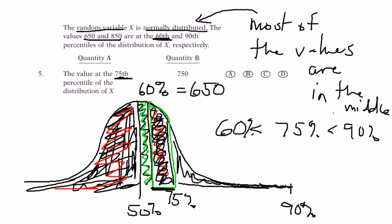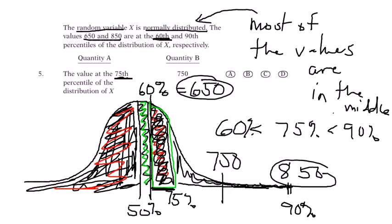In other words, the value... Oh, and the whole point of this was that we were told that this is 650 and 90% is 850. This line right here is 650 and 90% is at 850 which puts 750 halfway in between 650 and 850, and obviously the 75th percentile is to the left of 750.